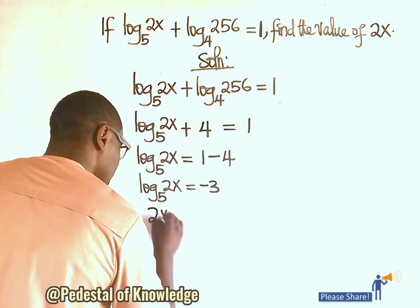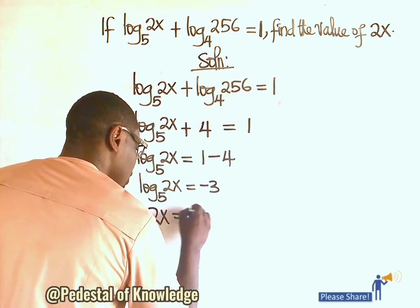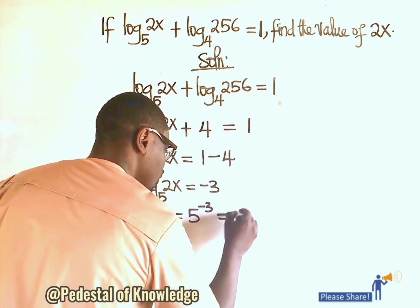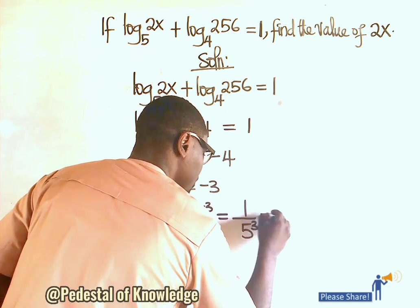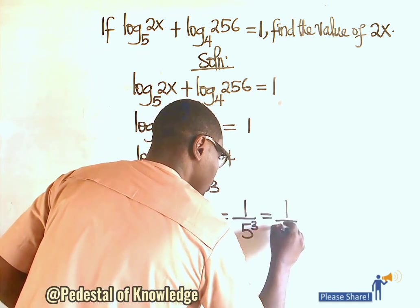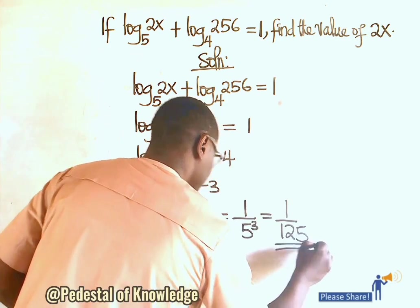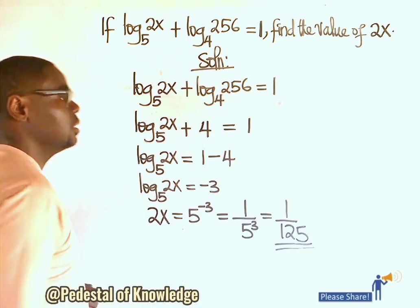2x equals 5 raised to power minus 3, and this is the same thing as 1 over 5 raised to power 3, which equals 1 over 125. So that's the value of 2x in this question.